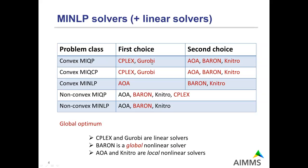You can see which solver returns a global solution: it's everywhere except AOA and Knitro when solving a non-convex problem, where they are only guaranteed to return a local solution. While finding a global solution is more interesting, proving global optimality is much harder than finding a local solution. Therefore, problems that Baron and CPLEX can tackle are usually much smaller than those AOA and Knitro can handle — that's why there is a trade-off and no single first choice.